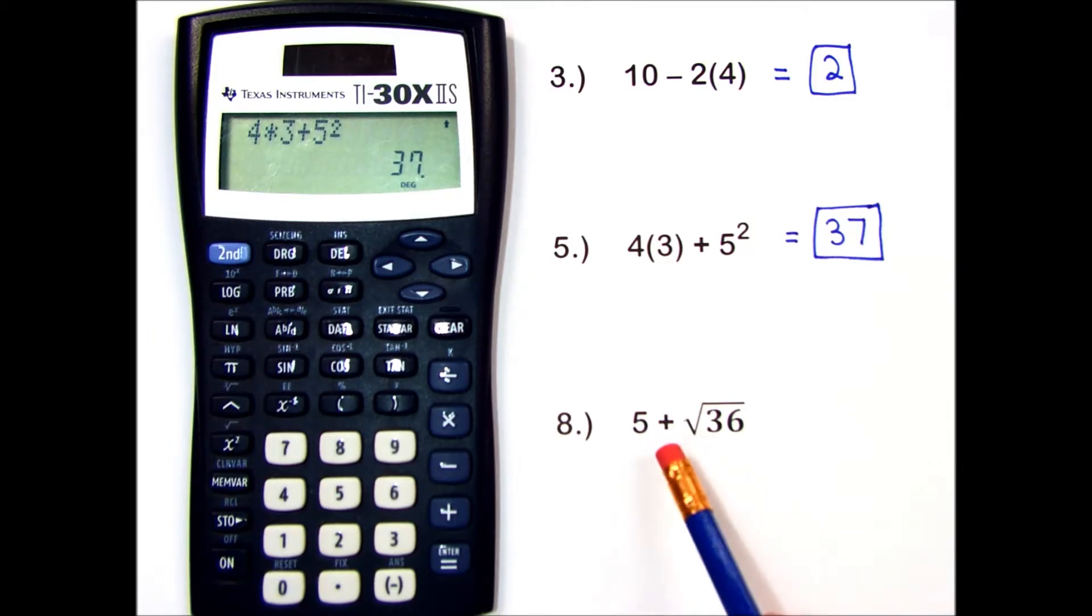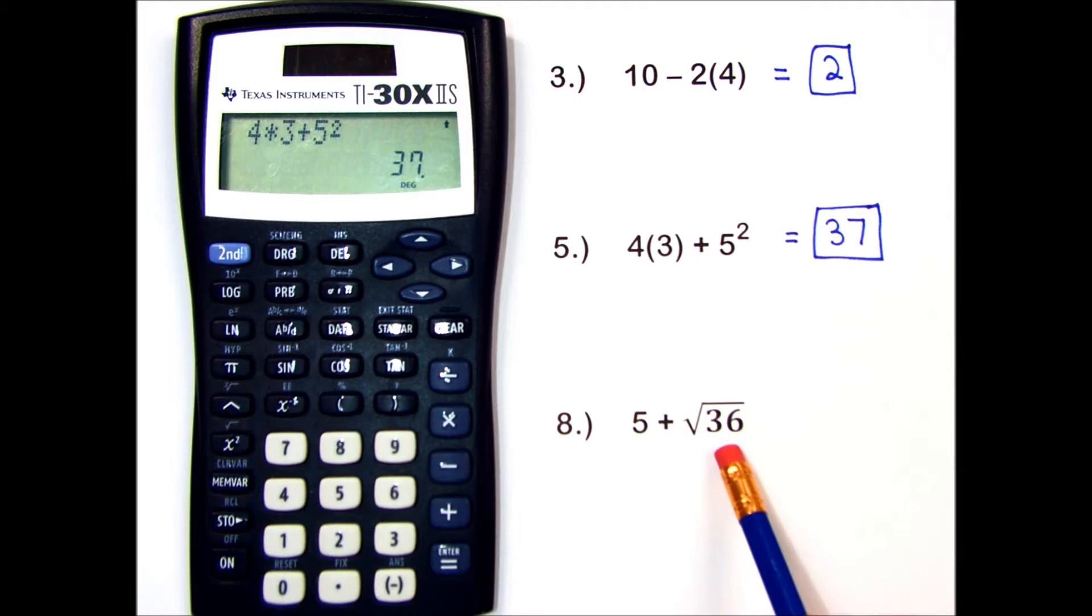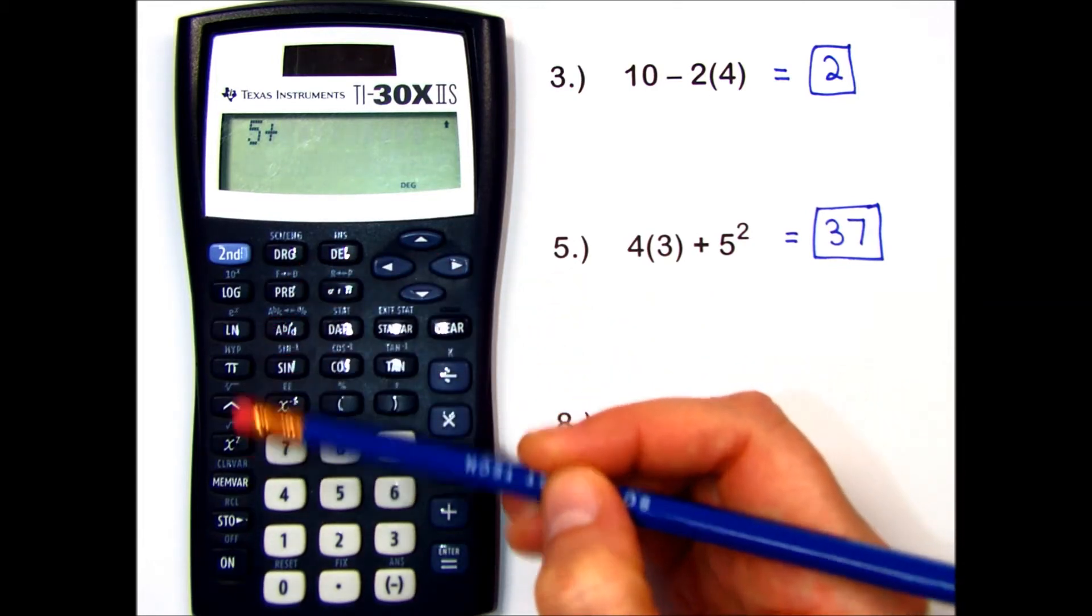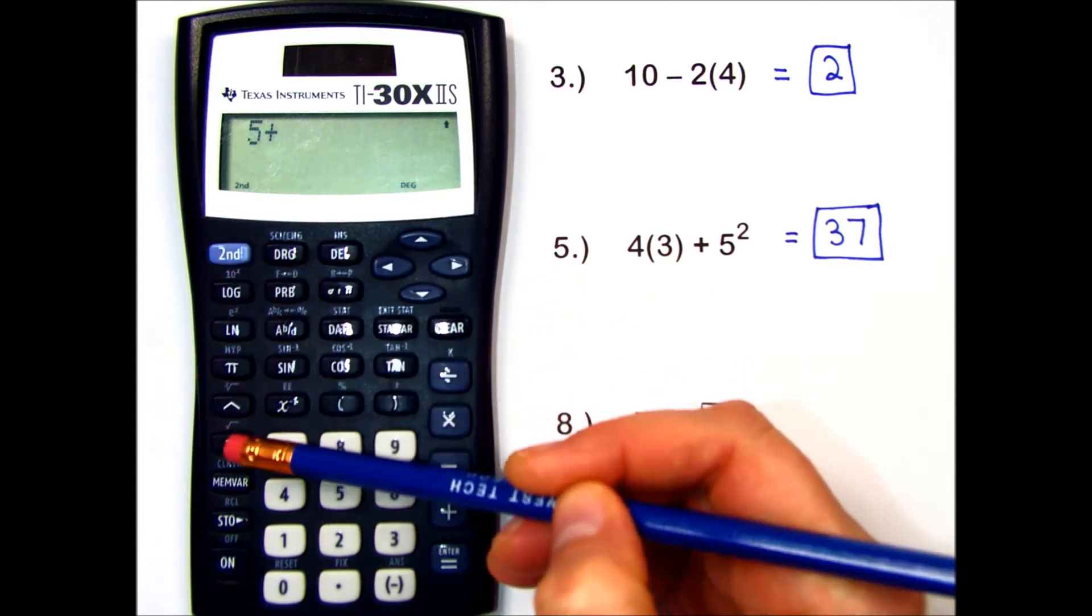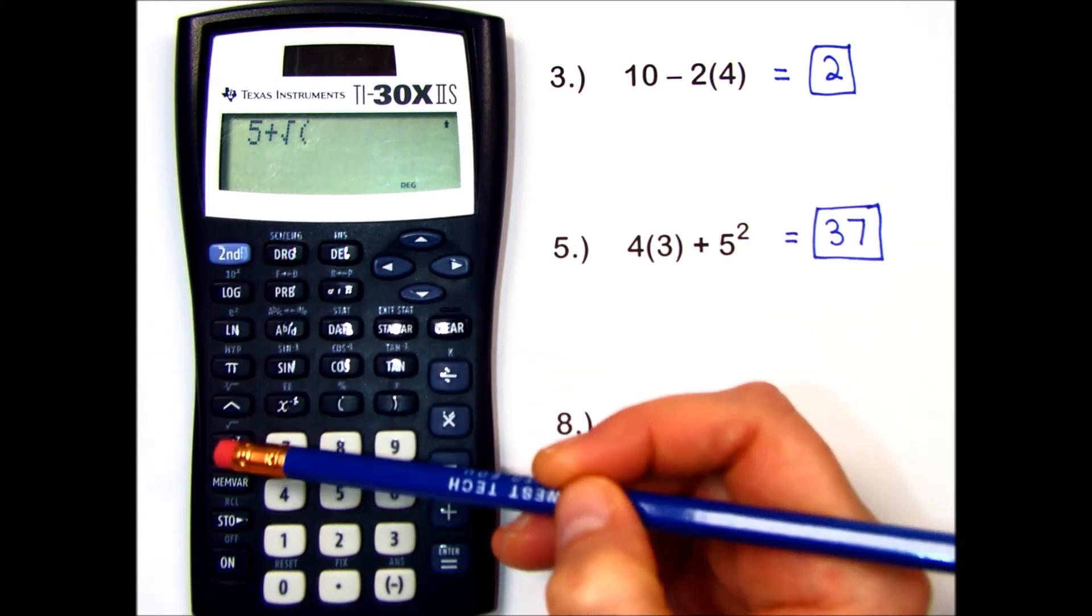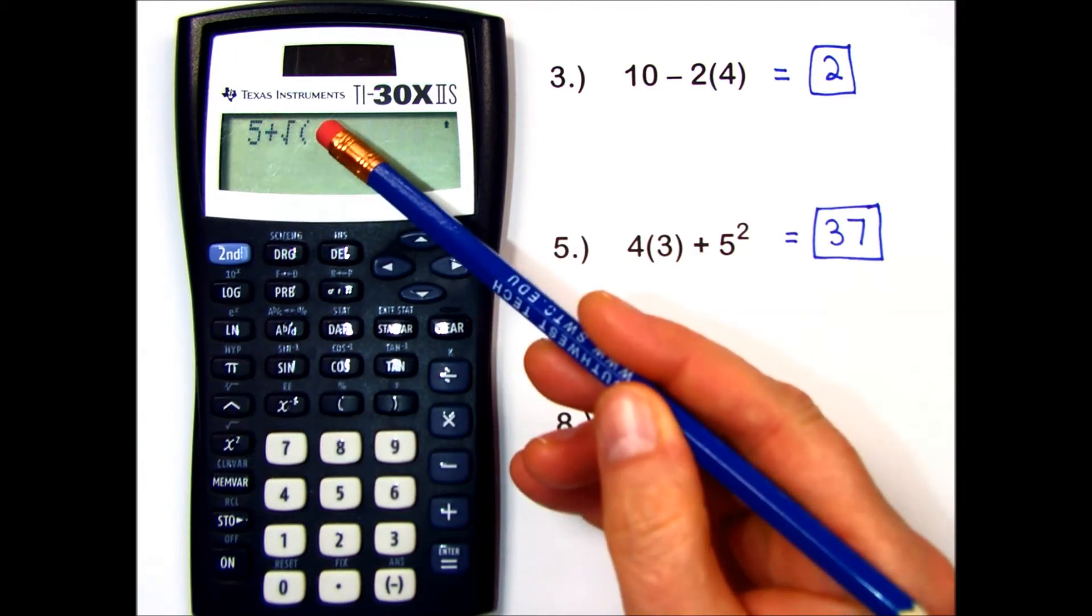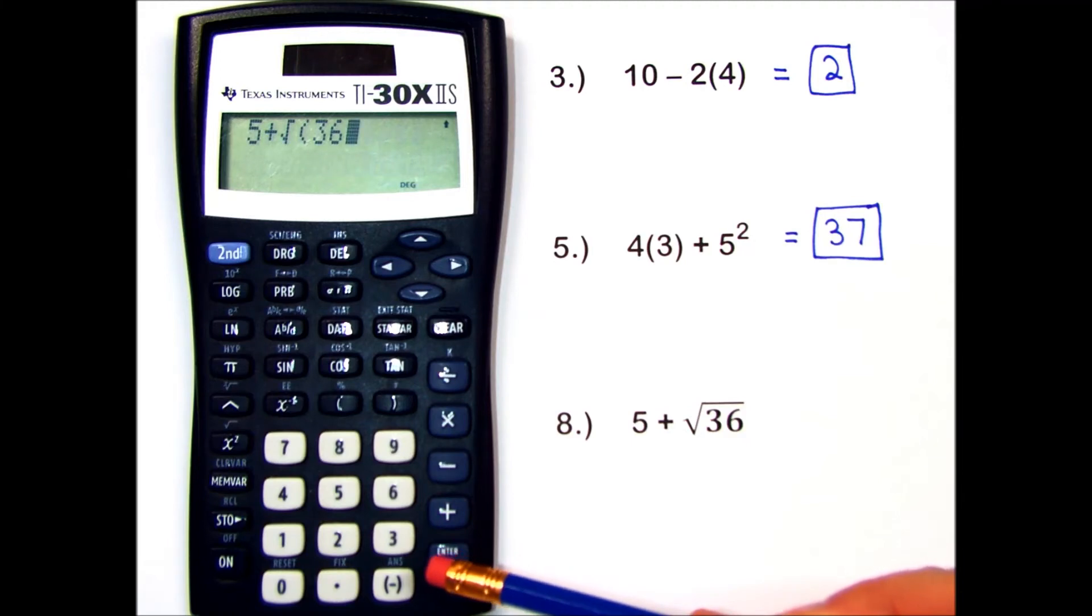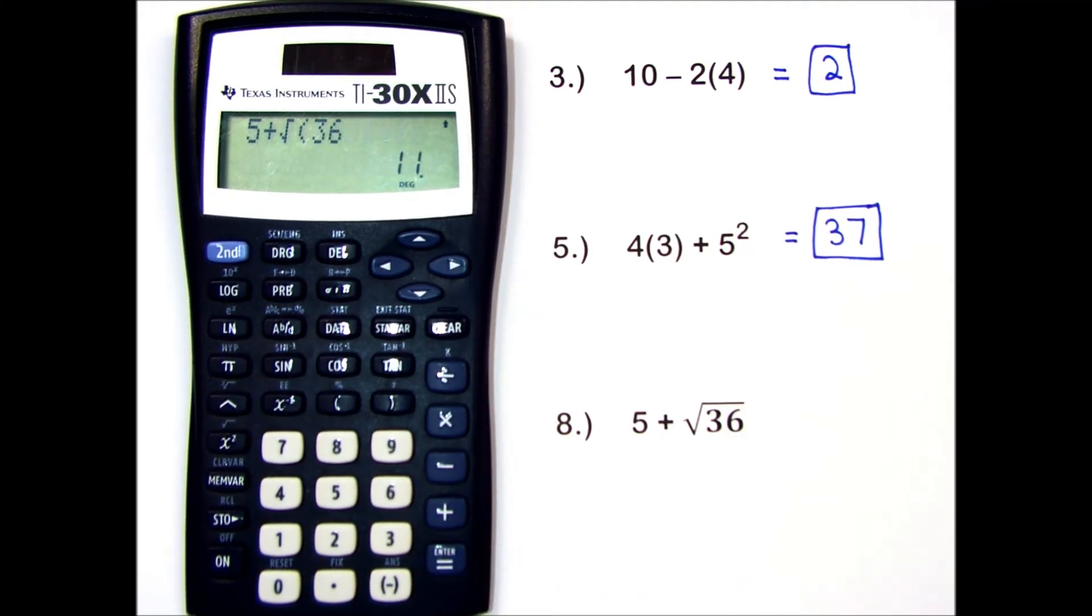We will try one more, number 8 with a square root. 5 plus, and on this calculator, I press the root function first, and then the number. So I find that in the second function above my x squared key, you can see it printed in there, 2nd, x squared, and it shows, as it should, a square root of 36. And my answer is 11.